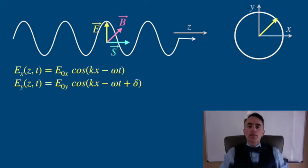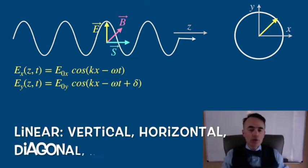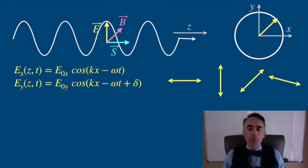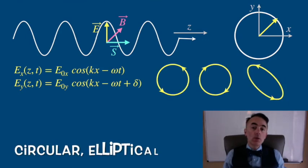Depending on the phase delta, this polarization will be linear, could be vertical, horizontal, diagonal or with any arbitrary angle. Or it could also be circular or elliptical.